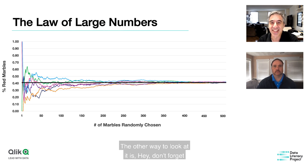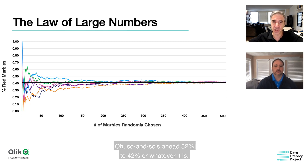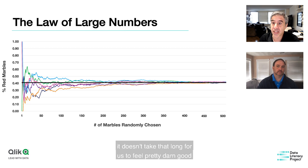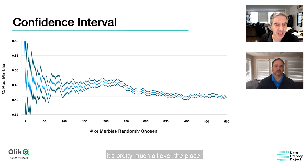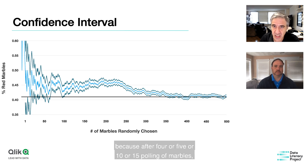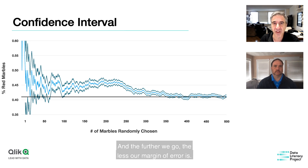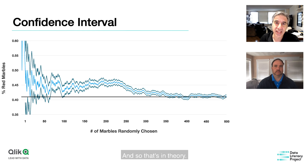There's a 5% chance this is pretty wrong — but of course people forget that when they hear that someone is ahead 52% to 42%. This is called a confidence interval. At the beginning of the marble experiment, the margin of error is high because after just four, five, or ten pulls we still can't know the true percentage. The further we go, the narrower the confidence interval becomes. But the problem is: people are not marbles.